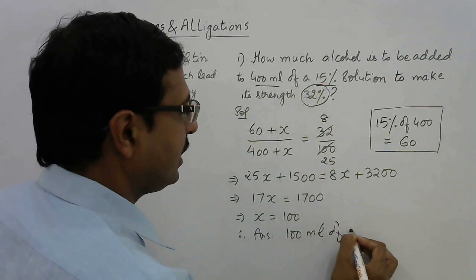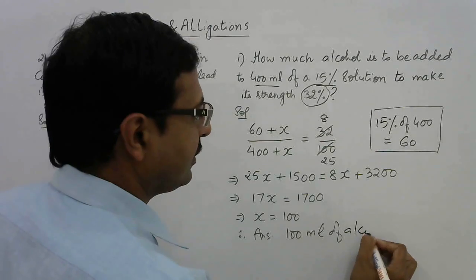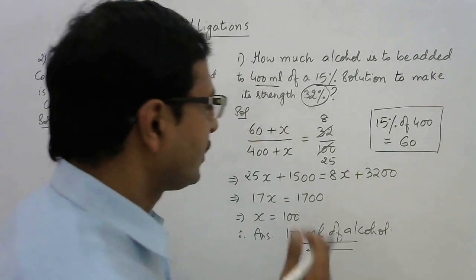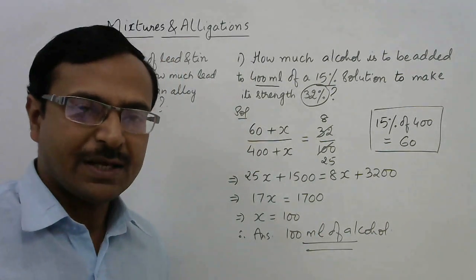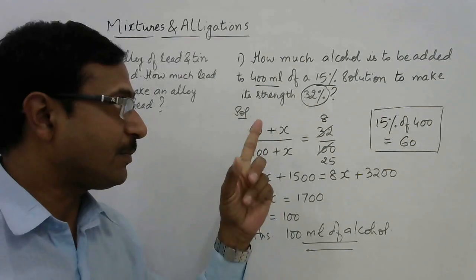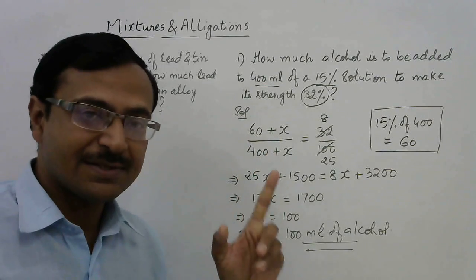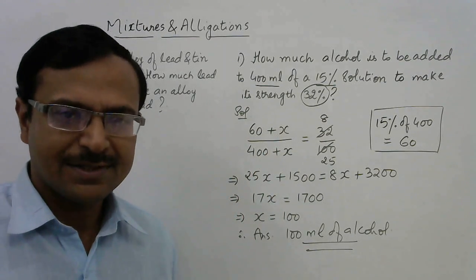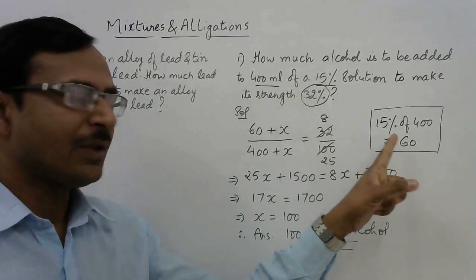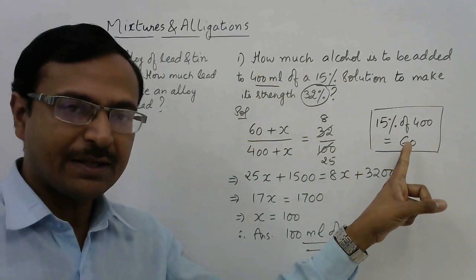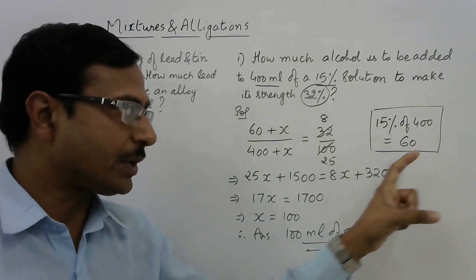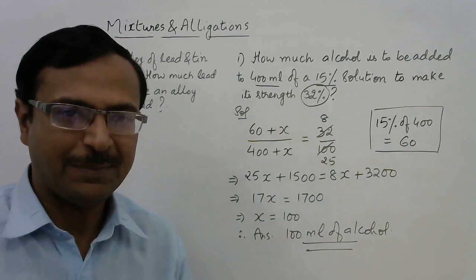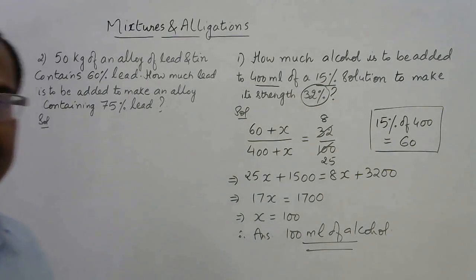Students who know this method can solve mixtures and allegations questions in hardly 7 to 8 seconds. You just need a little practice in calculating percentages orally and solving a linear equation in one variable. Let's try one more question like this.